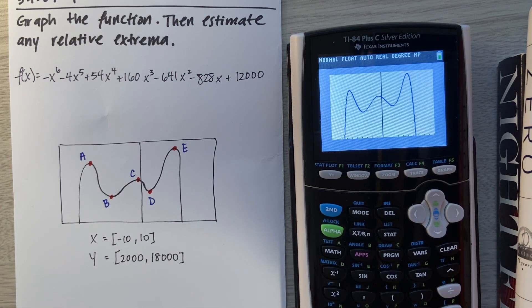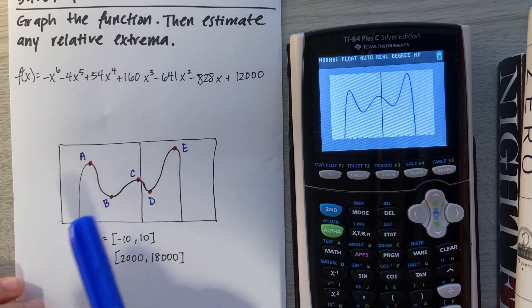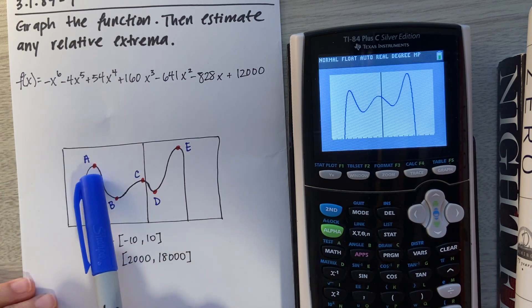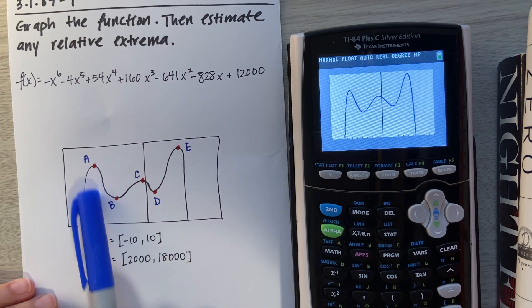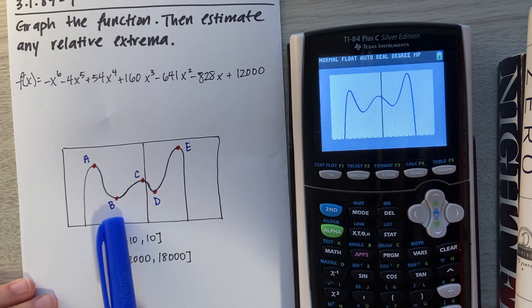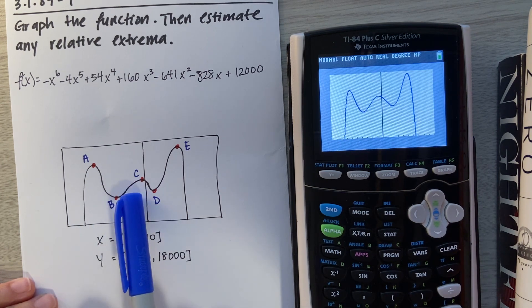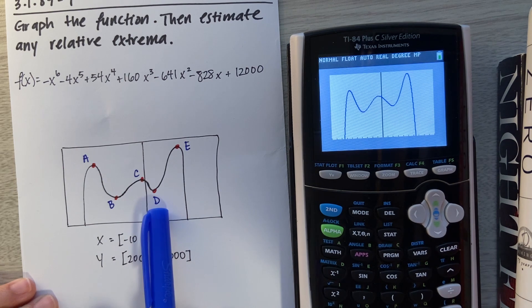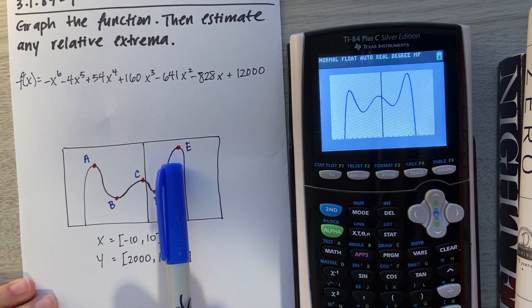Next, we want to just visually see firsthand where the mins and maxes might be. On the left-hand side, I made it easier for you to see where the mins and maxes are, and I denoted them with letters. At point A, we see a relative max. Point B, there's a relative min. C, relative max. D, relative min. And lastly, E, another relative max.